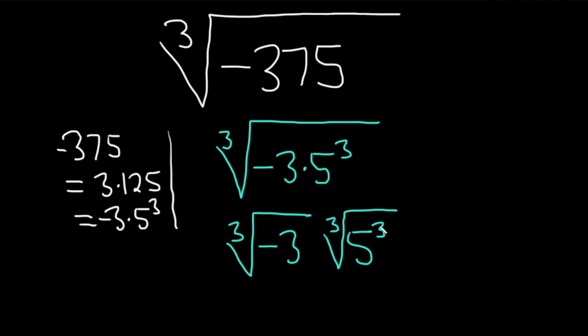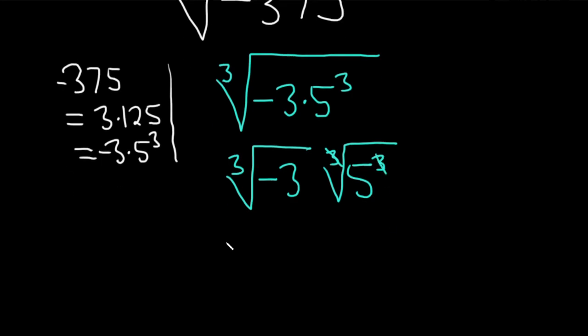And whenever these match, whenever the exponent matches the index, these basically just cancel. So it goes away. So we have the cube root of negative 3, and this is 5.